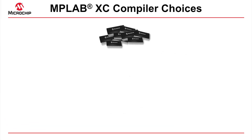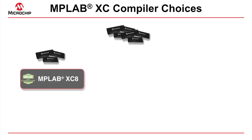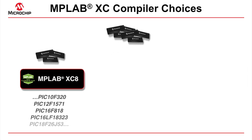Microchip produces thousands of PIC MCU devices, but these can all be targeted with just three compilers. The MPLAB XC8 compiler is used for all 8-bit devices, including the PIC10, PIC12, PIC16, and PIC18 MCUs.